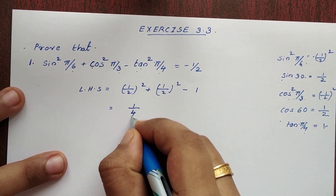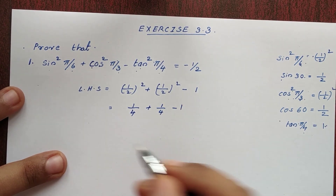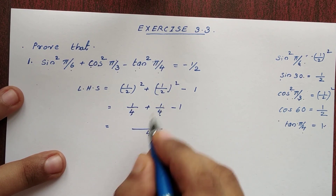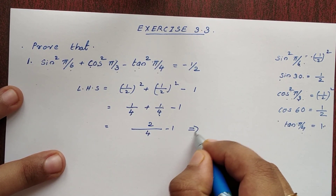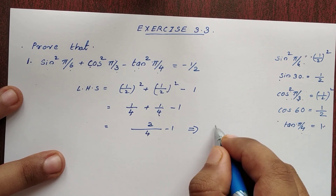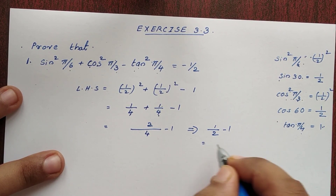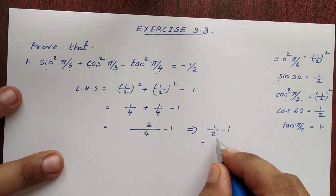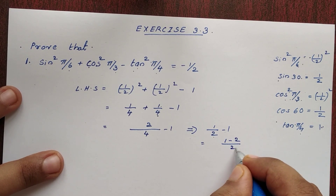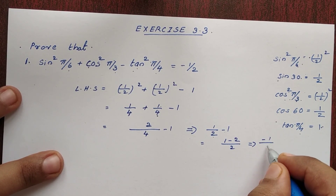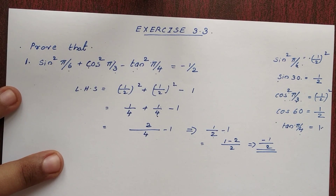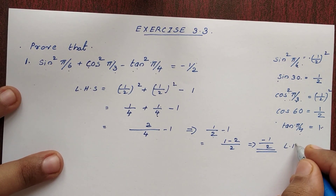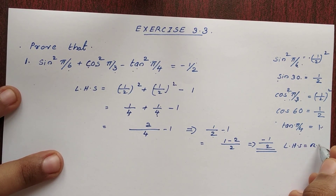So this is equal to 1 by 4 plus 1 by 4 minus 1. Adding the numerators: 1 by 2 minus 1. That is 1 minus 2 by 2, which equals minus 1 by 2. That is the answer. So LHS is equal to minus 1 by 2, which is equal to RHS.